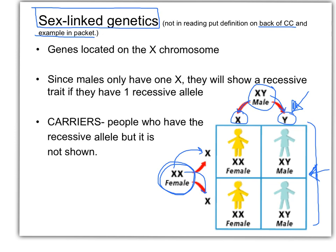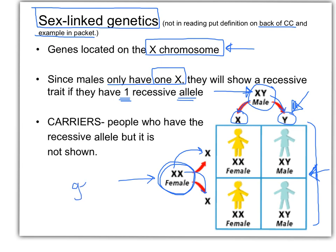When we look at sex-linked traits, we're looking at the X chromosome. There's only one sex-linked trait that I know of that's on the Y chromosome — everything else is on the X, which contains way more information. Because males have only one X, if they get a recessive trait, they show the trait, because they only get one allele. Males only have one allele because they only have one X chromosome, and if it's recessive, it will show up. Females have two X chromosomes, so they get two alleles for sex-linked traits.